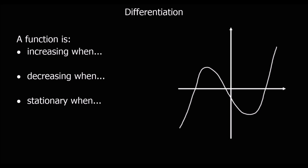So I've got a function over here. As you can see, there are parts of the function where it's going up — so this part here, we've got an increasing function with a positive gradient. Same again over here, it's going to be increasing, so it's got a positive gradient. A function is increasing, so it's got a positive gradient, when dy/dx — which is the gradient function — is bigger than zero.